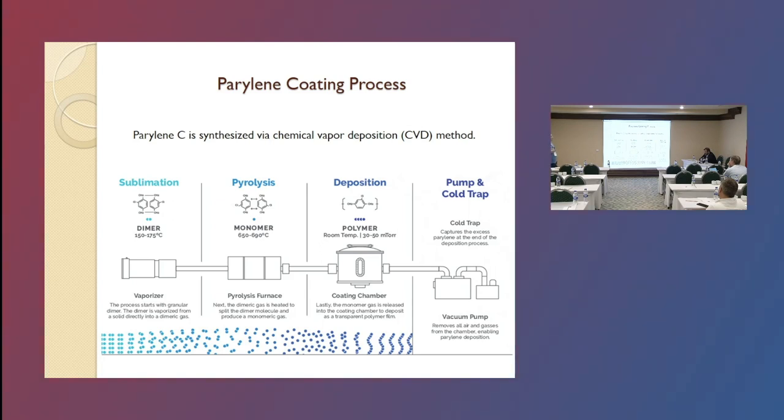Parylene C is synthesized as a CVD method. CVD method consists of four sections: sublimation, pyrolysis, deposition, and cold trap section. The chemical company sells Parylene as a dimer granular form, and the granular dimer form is put into this chamber and the dimer is vaporized from the solid directly into the dimeric gas at 150 Celsius.